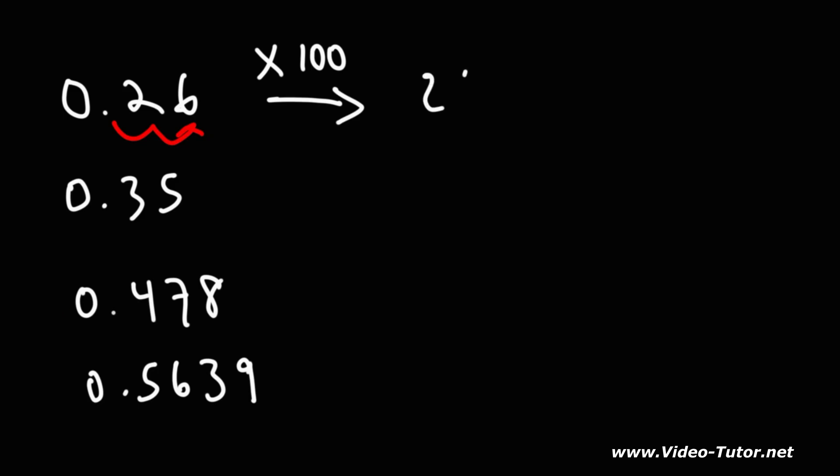So 0.26 is equal to 26%. If you multiply 0.35 by 100, you're going to get 35%. If you move the decimal point two units to the right, it will now be here.